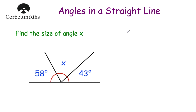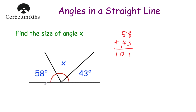So let's take 58 and add 43. 8 plus 3 is equal to 11, so put our 1 down and carry 1. 5 plus 4 is equal to 9, plus 1 is equal to 10. So 58 degrees plus 43 degrees is 101 degrees. And if we take that away from 180, because we know the angles in a straight line add together to give us 180 degrees, what's left will be x.